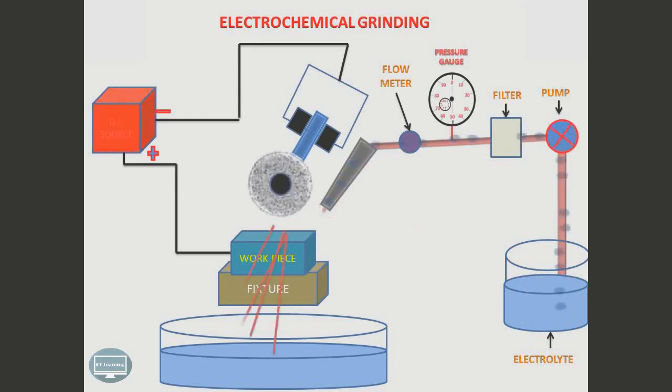This electrolyte will reach the nozzle and the nozzle will spray this electrolyte in between the abrasive wheel and workpiece. Oxide layers are removed by the insulating grit of the abrasive wheel. This is the working of the electrochemical grinding process.